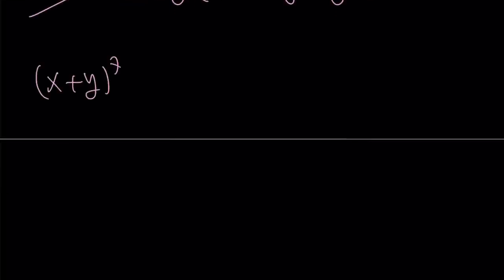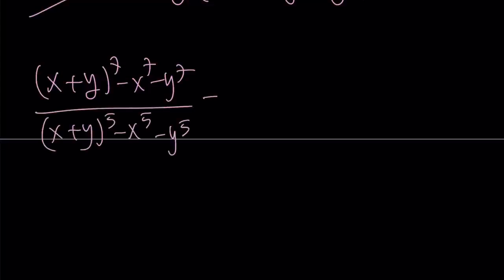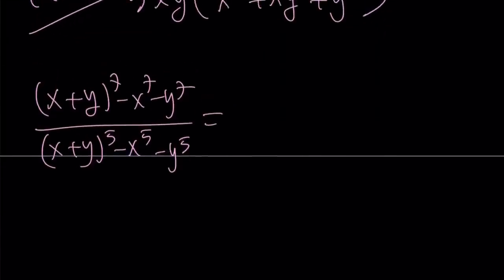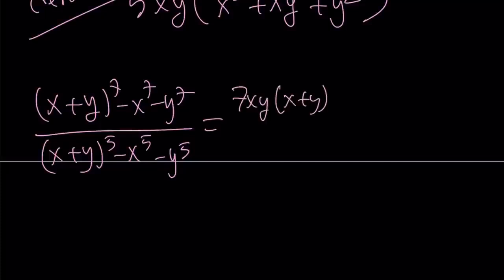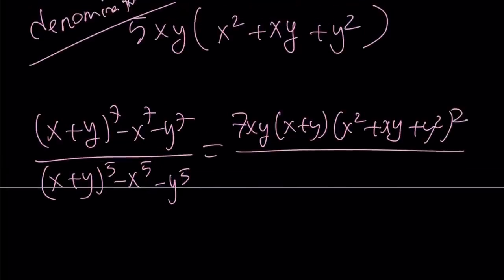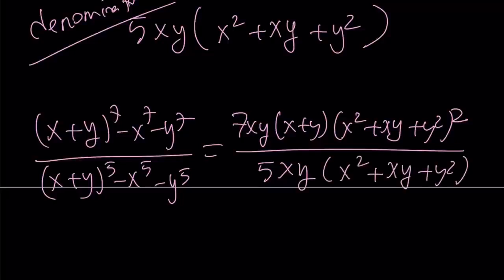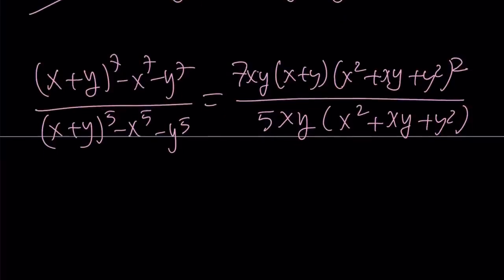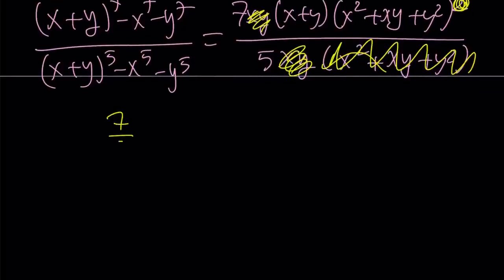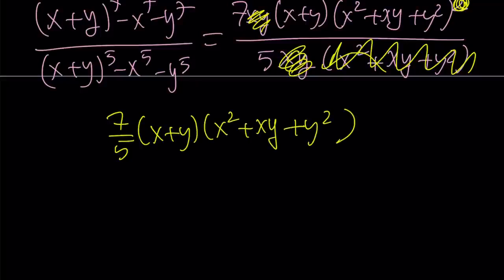I have the numerator and the denominator, so let's put it together and simplify. Our original expression was x plus y to the seventh minus x to the seventh minus y to the seventh, divided by the same thing with fifth powers. That equals — looking at our cheat sheet — seven x y times x plus y times x squared plus x y plus y squared, quantity squared, divided by five x y times x squared plus x y plus y squared. The x y cancels out, and one of the x squared plus x y plus y squared factors also cancels, leaving us with seven over five times x plus y times x squared plus x y plus y squared. That is our answer.